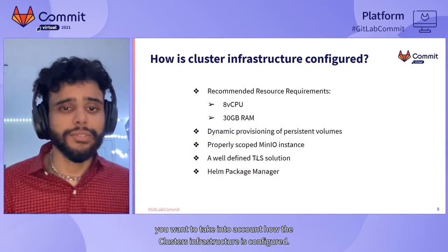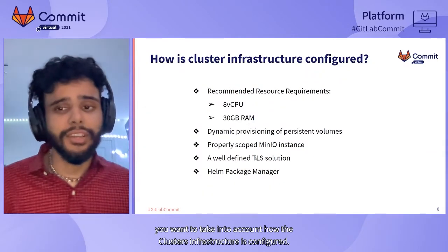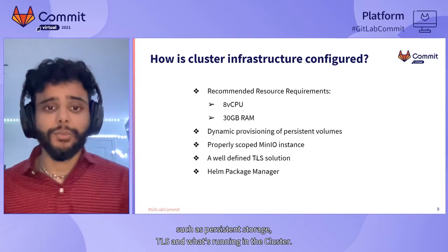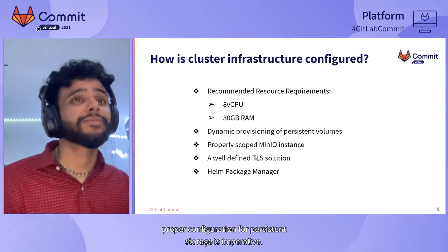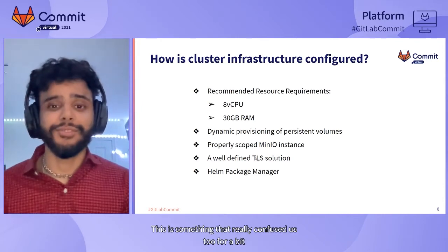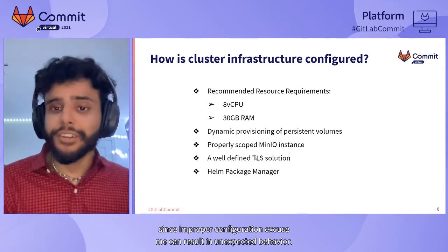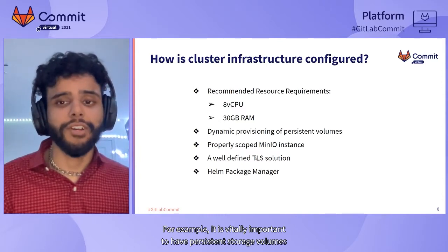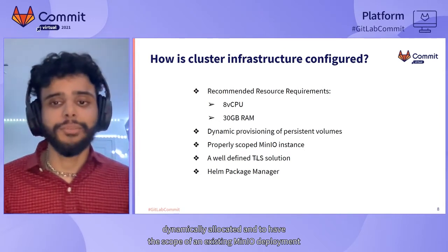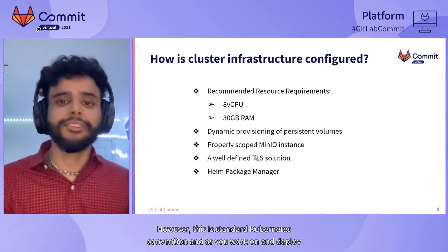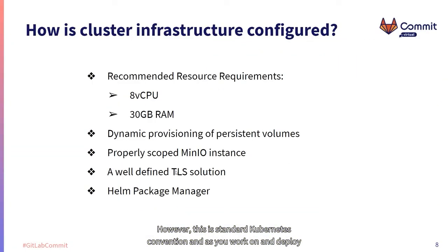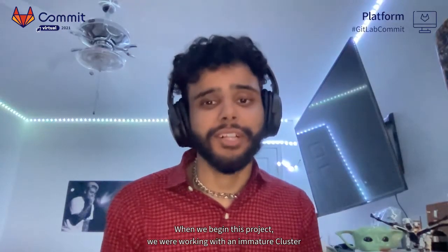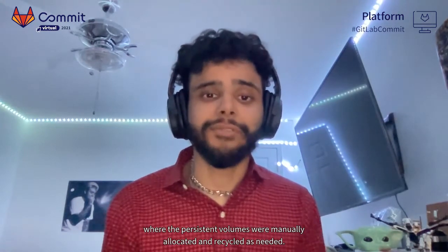You want to take into account how the cluster's infrastructure is configured — specifically how it handles persistent storage, TLS, and what's running in the cluster. Proper configuration for persistent storage is imperative. This is something that really confused us for a bit, since improper configuration can result in unexpected behavior. For example, it is vitally important to have persistent storage volumes dynamically allocated and to have the scope of an existing MinIO deployment limited to just a single persistent volume. When we began this project, we were working with an immature cluster where persistent volumes were manually allocated and recycled as needed.